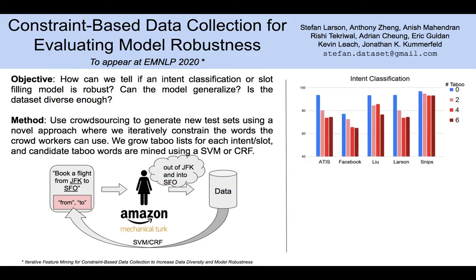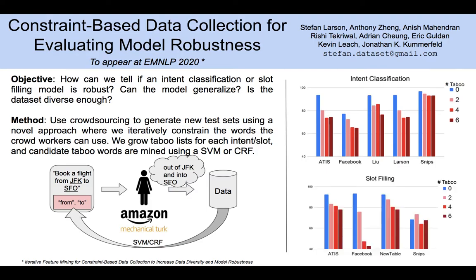What we found for intent classification is that performance takes a quite substantial drop going from 0 to only 2 taboo words, in most cases, except for the SNPs dataset. For slot filling, the results were quite similar — a little bit less drastic, but still quite severe in several cases.